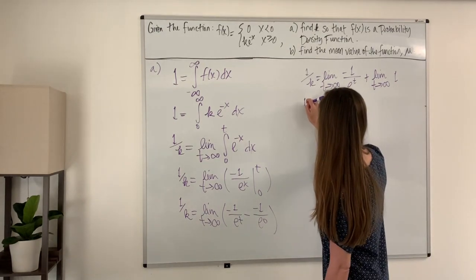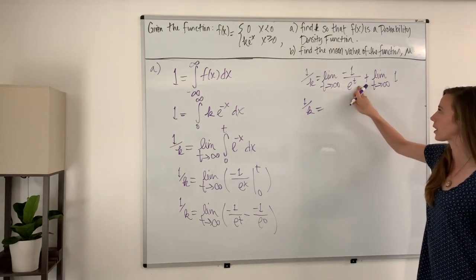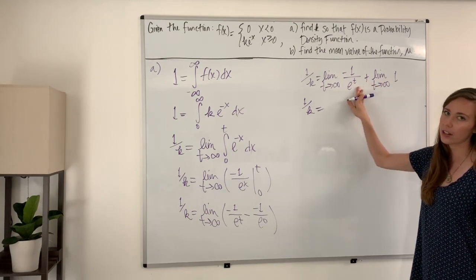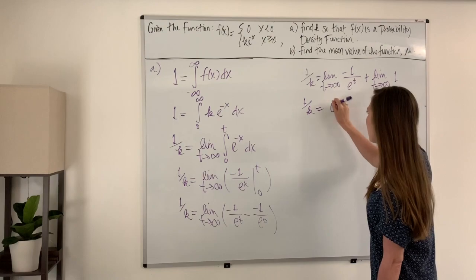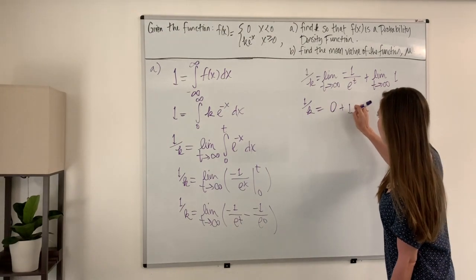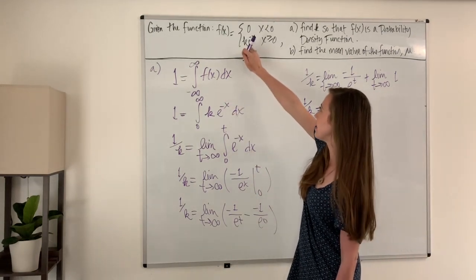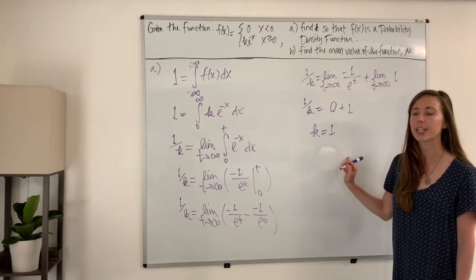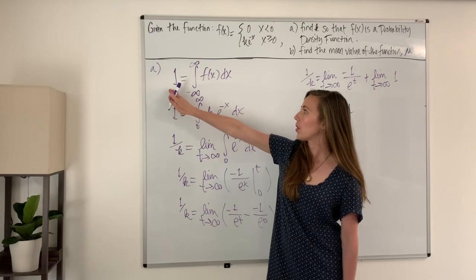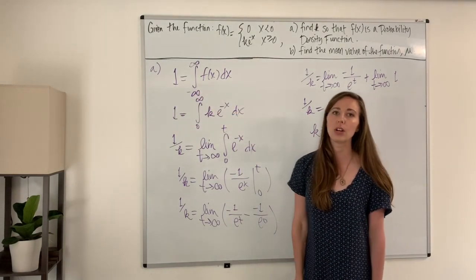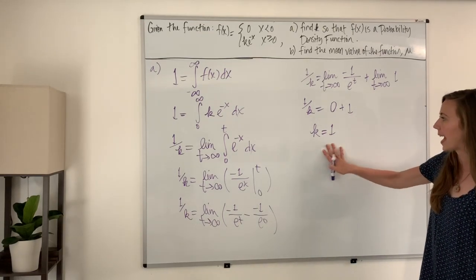Now we evaluate these limits. As t gets very, very large, the denominator e to the t gets very large, so negative one over e to the t approaches zero from negative values — this limit is just zero. The limit of a constant is the constant, so we get one over k equals one, meaning k equals one. If we set k equal to one, this function becomes a probability density function. The key takeaway is that the total probability area under the curve is always equal to one, and we used improper integration to solve for k.